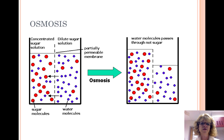Osmosis is the diffusion of water and is a type of passive transport across the cell membrane. In a glucose solution, it's easier for water molecules to cross the membrane than large glucose molecules. During osmosis, water moves from the area of lower concentration to the area of higher concentration to try and dilute the higher concentration.